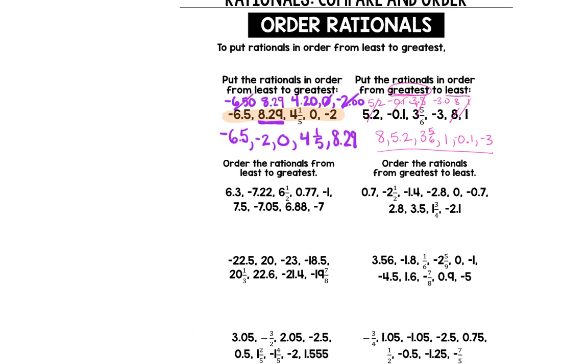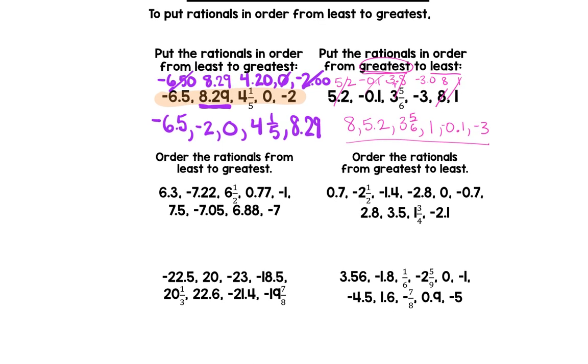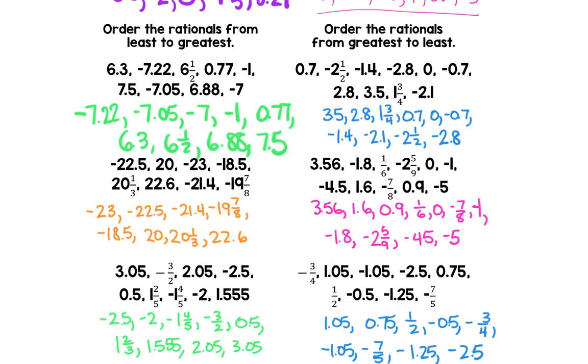I want you to practice these six on your own. These right here are least to greatest. These you're going to put greatest to least. Here are the answers. Take a look. Make sure you were successful in ordering these rational numbers from least to greatest. Thank you.